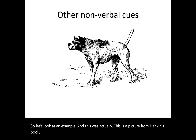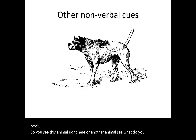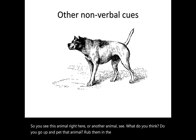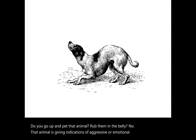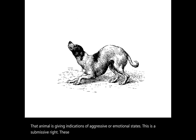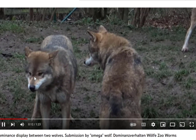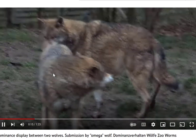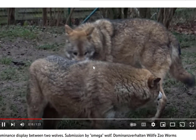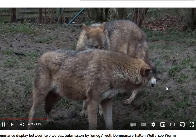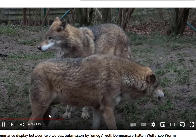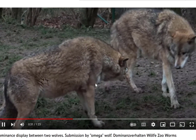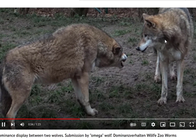Darwin's book included pictures illustrating animal emotional communication. Looking at an animal showing signs of aggression, you wouldn't go up and pet it. Animals communicate submissive versus dominant states clearly — for example, with wolves, the submissive wolf shows its teeth slightly but tucks its tail underneath, signaling it doesn't want to fight, while the dominant alpha keeps ears forward and a higher posture.